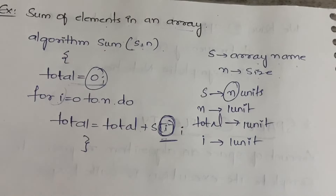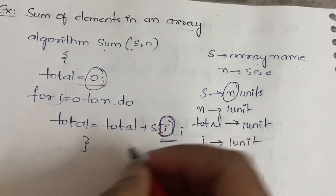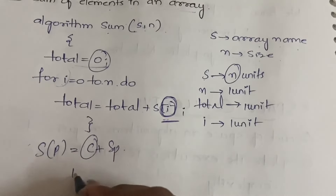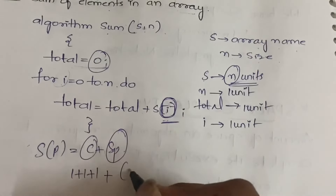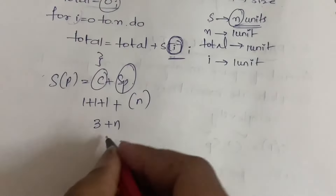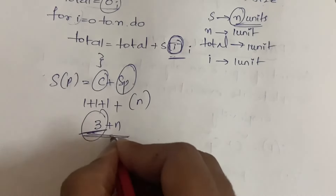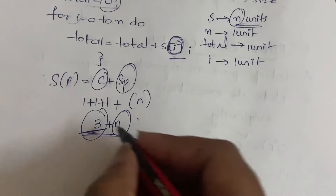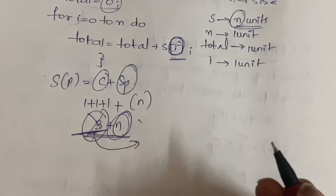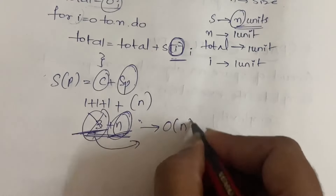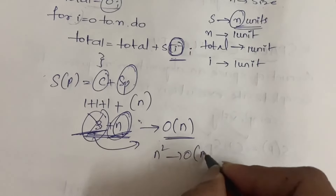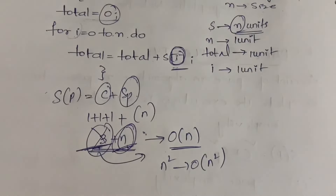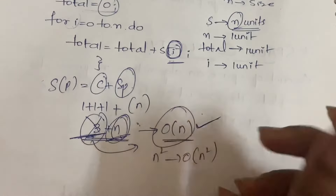If a variable depends on two variables, you take n squared; if three variables, n cubed, and so on. So the formula is S(P) = C + SP: constants give 1 + 1 + 1 and SP is n, so you get 3 + n. Even though you get 3 + n, you should not consider the 3, because you have n. Whatever term has the highest power, you consider only that. So the space complexity is O(n). If instead of n you got n squared, it would be O(n²). The space complexity of this algorithm is O(n).